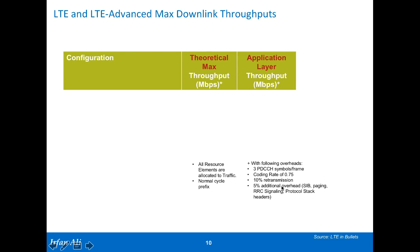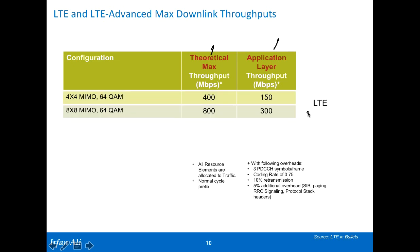So given all of this, what are the LTE and LTE Advanced maximum downlink throughputs? The source material here is from 'LTE in Bullets,' an excellent reference for learning about LTE — a bit radio-focused, but gives a good overview. Looking at configurations, we compare theoretical throughput — the very maximum — versus typical application-layer throughput. For an LTE system with 4x4 MIMO — meaning your phone has four antennas and your base station has four antennas — you get a maximum of 150 megabits per second at the application layer. Does your phone have four antennas? No, most phones have two, so the speed comes down.